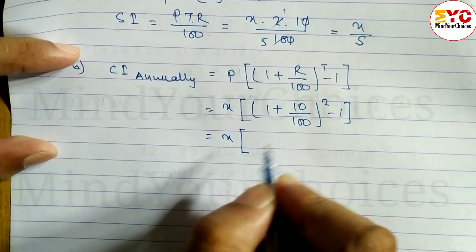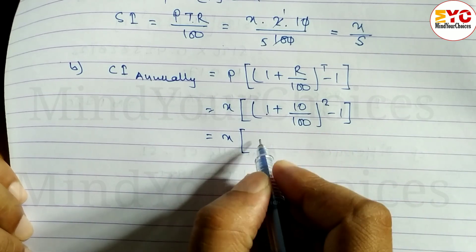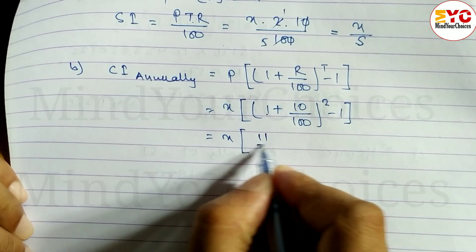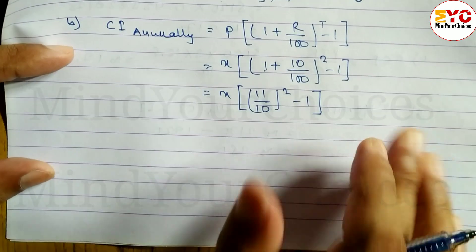x times, 100 plus 10 is 110 divided by 100. 110 divided by 10 is 11 by 10, so 11 by 10 whole square minus 1.